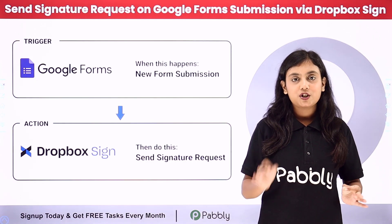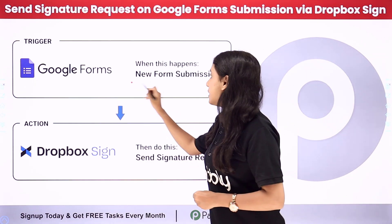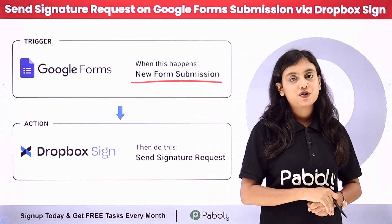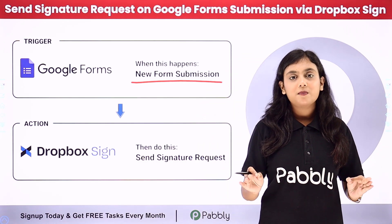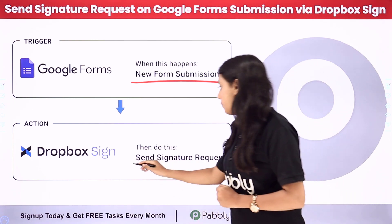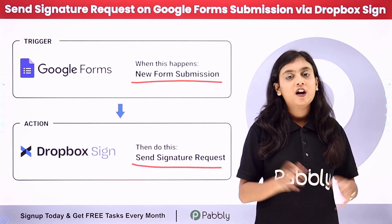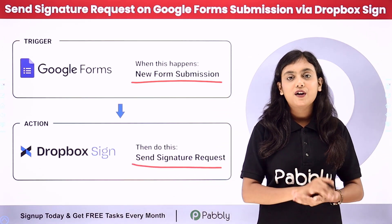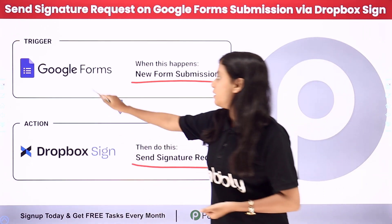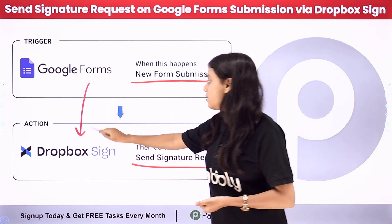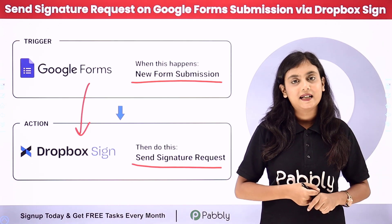In this automation, as soon as any of our employees submit the form using Google Forms, automatically a signature request will be forwarded to them with the help of Dropbox Sign. For that, we are going to create an automation between Google Forms and Dropbox Sign with the help of Pabbly Connect.